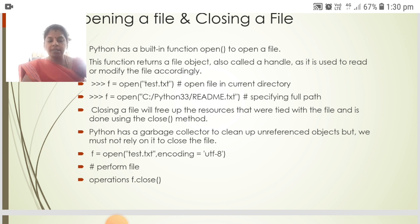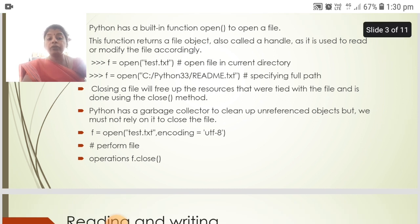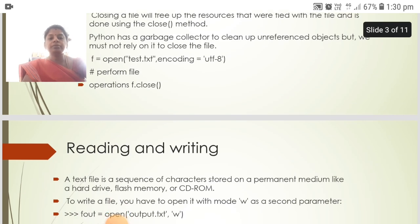Python has a garbage collector to clean up unreferenced objects, but we must not rely on it to close the file. For example: f = open(filename), perform operations, then f.close().